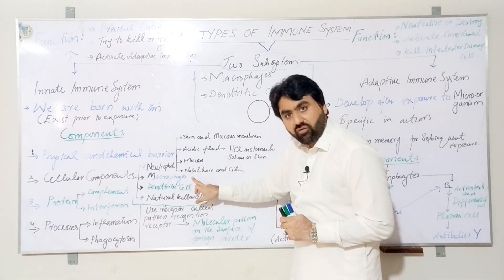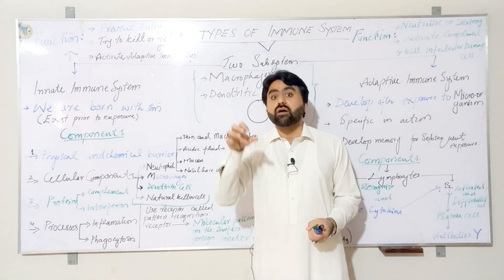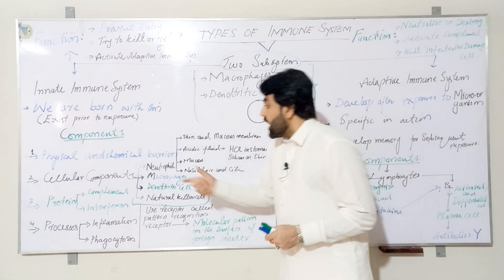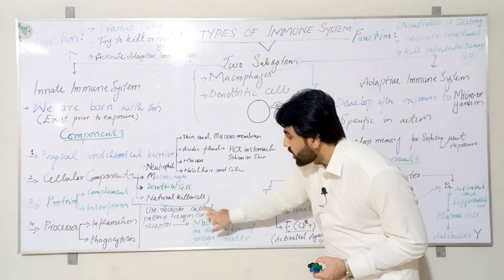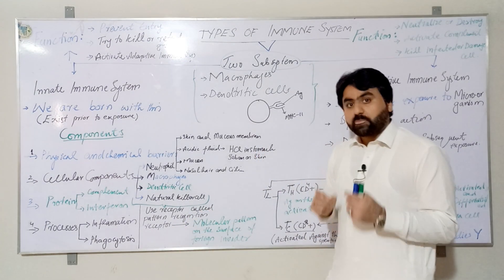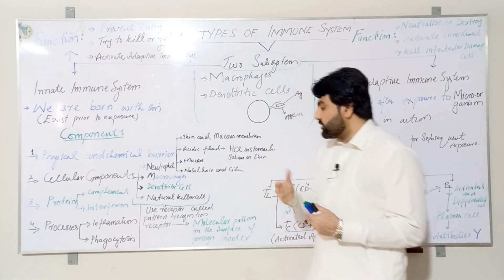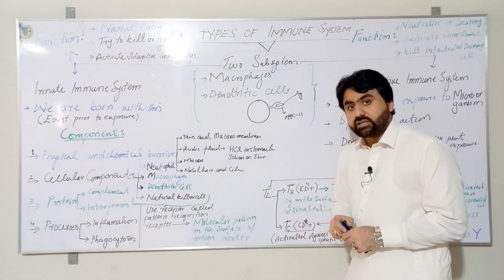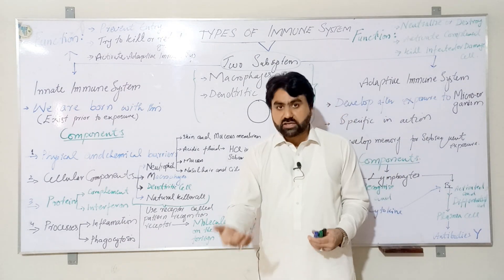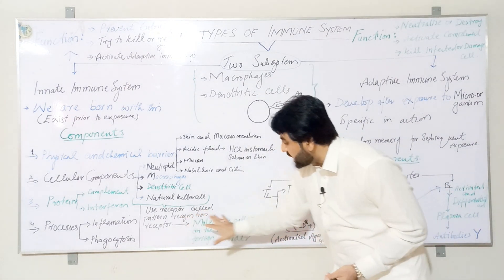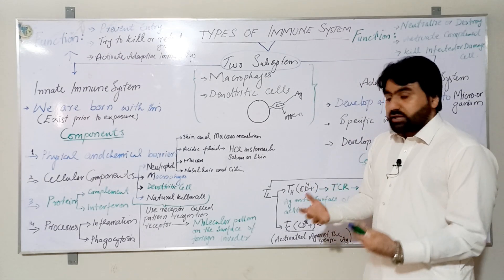Among the cellular components, the most important include neutrophils, macrophages, dendritic cells, and natural killer cells. Again, these components are all present at birth. They recognize the foreign invader as non-self by using receptors called pattern recognition receptors, which are present on these cellular components. With these receptors, they recognize the molecular patterns on the surfaces of foreign invaders like bacteria, viruses, and fungi.